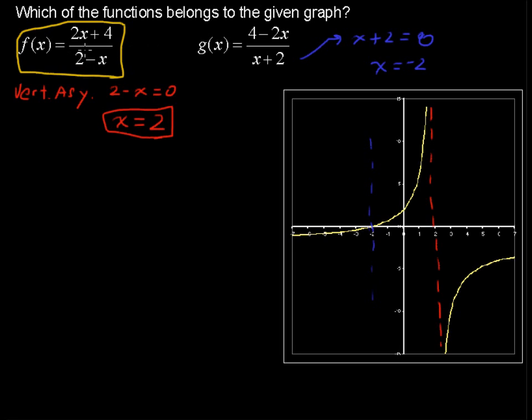We can also look at the leading coefficients. If I were to rewrite this as 2x plus 4 over negative x plus 2, we could do that there. I would look at the leading coefficients because the degrees on the numerator and the denominator are the same.